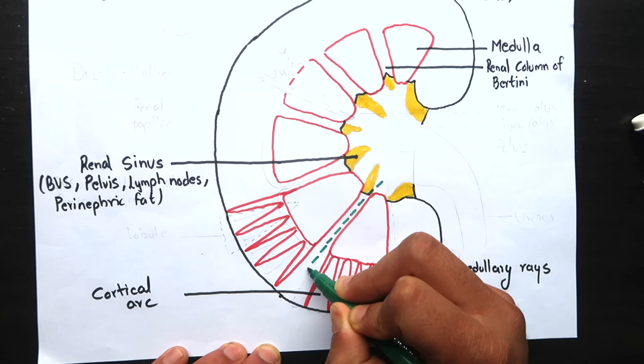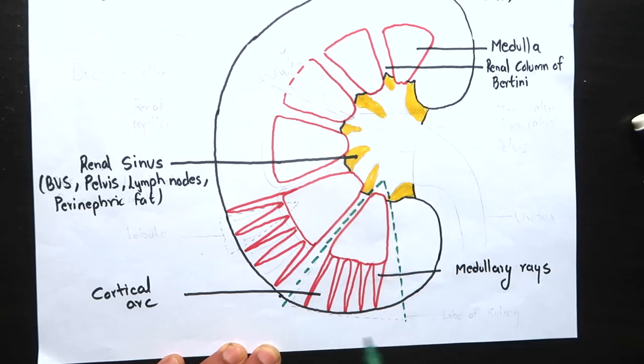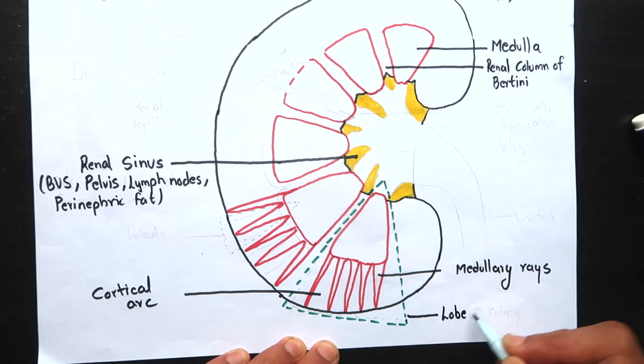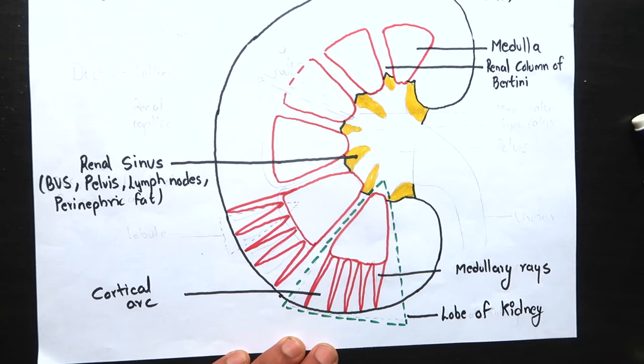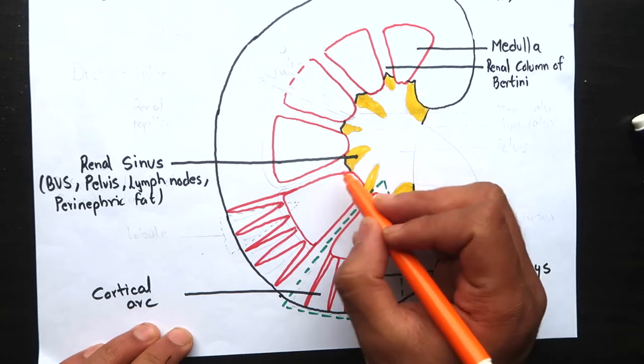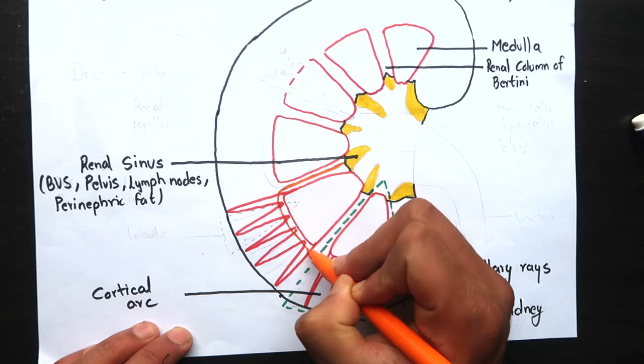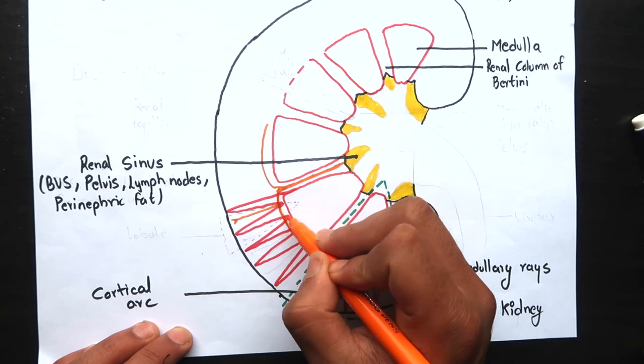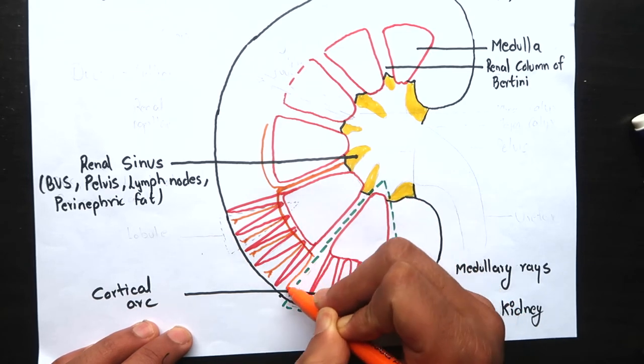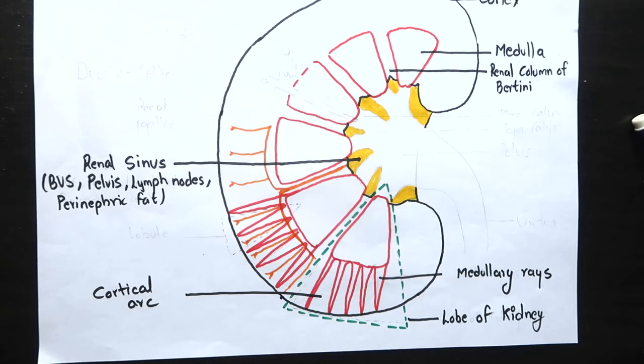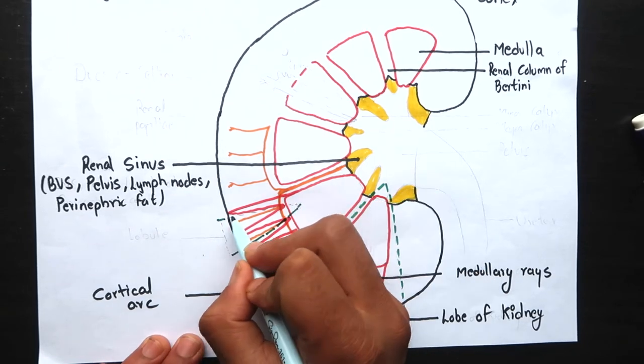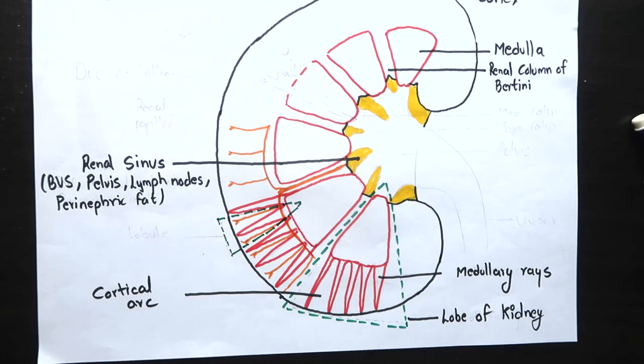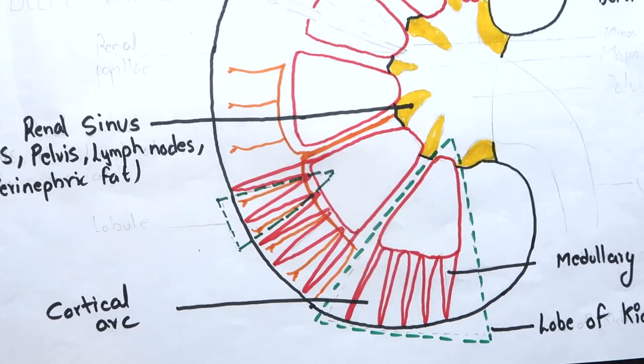The renal pyramid capped with adjoining cortical arch forms a renal lobe. On average, there are around 7 to 18 renal lobes in one kidney. Here in the orange, I am drawing an artery coming from the branch of renal artery. The interlobar artery runs between two pyramids and divides into arcuate artery which further gives interlobular arteries. The area between two interlobular arteries with a medullary ray in the center is called renal lobule.